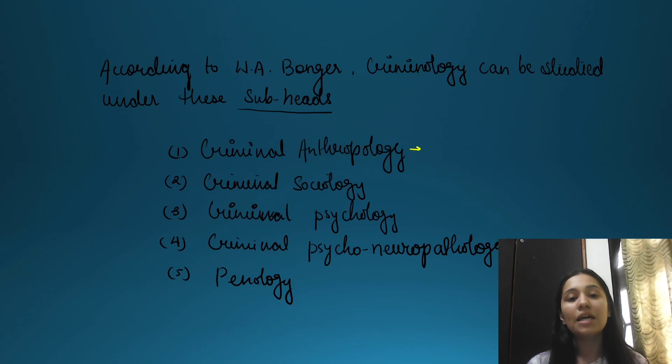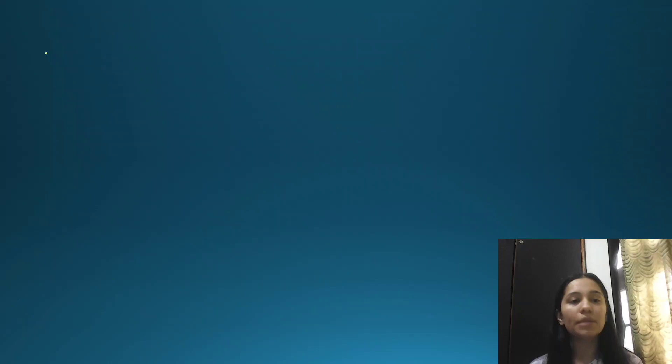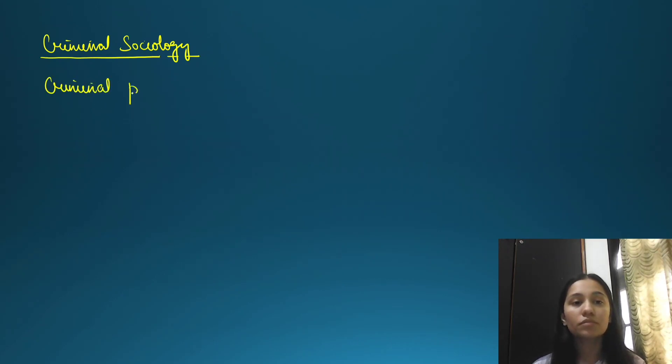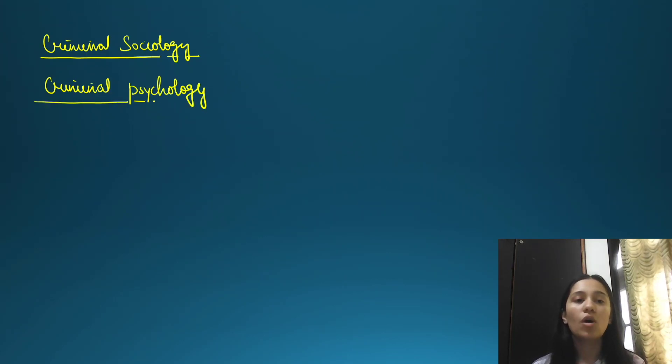The second subhead is criminal sociology, which is completely focused on social things — the criminal's social behavior, social makeup, and social involvement in certain activities. Then we have criminal psychology. All these subheads are interrelated to each other.